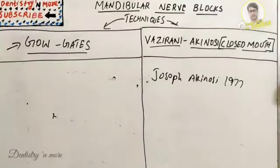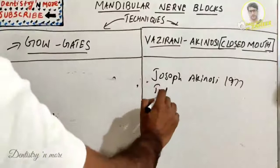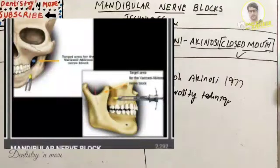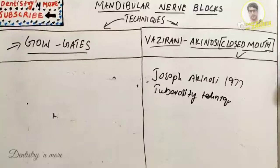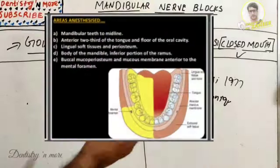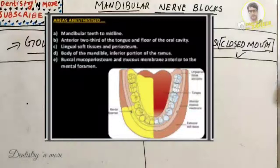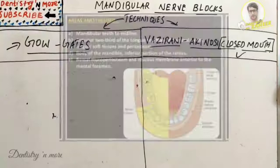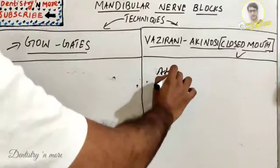Other names for this technique include the Akinosi technique, tuberosity technique, closed mouth mandibular nerve block, and closed mouth nerve block. The nerves anesthetized are the inferior alveolar, mental, incisive, lingual, and mylohyoid nerves. The areas anesthetized include mandibular teeth to the midline, floor of the oral cavity, lingual soft tissues and periosteum, body of the mandible, inferior portion of the ramus, and buccal mucoperiosteum anterior to the mental foramen.